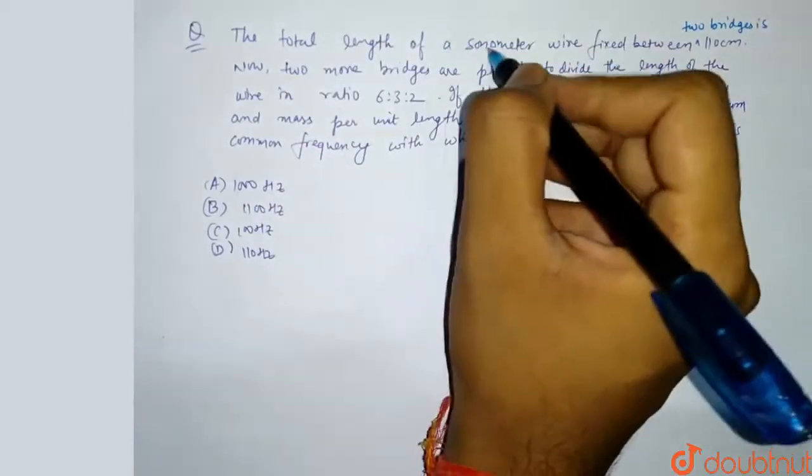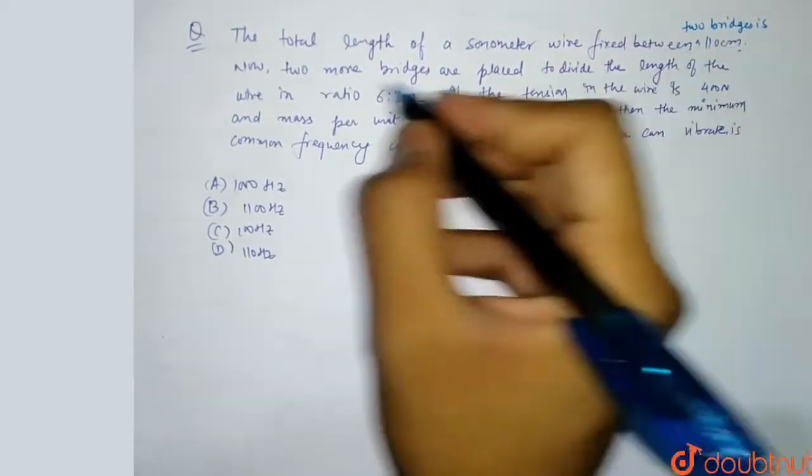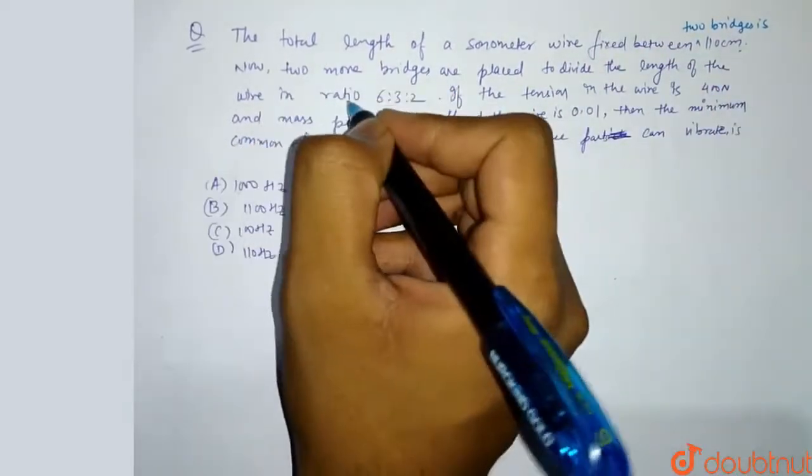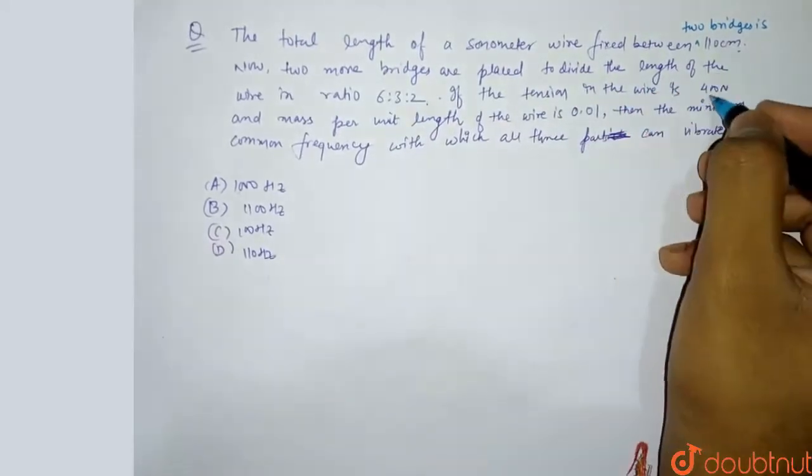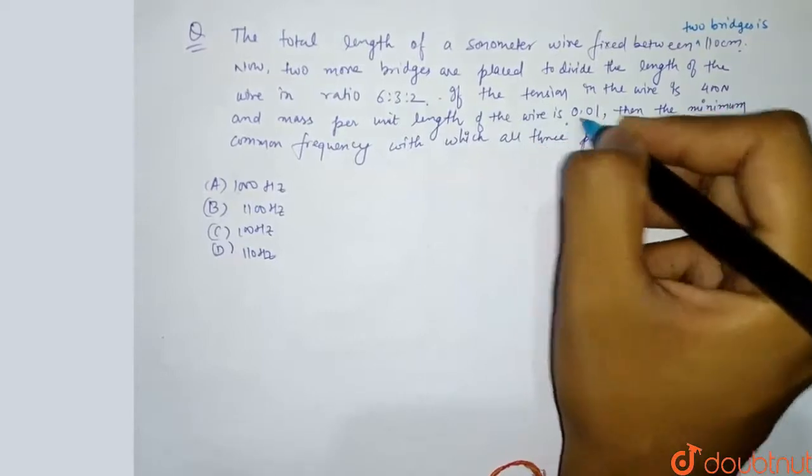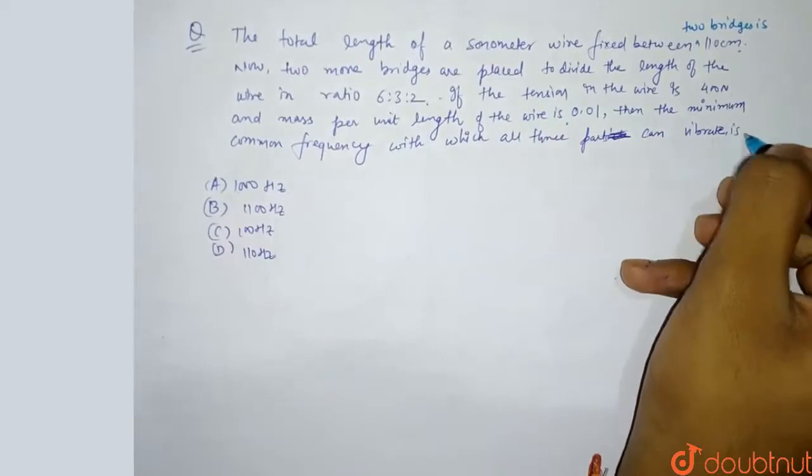The total length of a sonometer wire fixed between two bridges is 110 cm. Now two more bridges are placed to divide the length of the wire in the ratio 6 is to 3 is to 2. If the tension in the wire is 400 N and mass per unit length of the wire is 0.01, then the minimum common frequency with which all three parts can vibrate is.